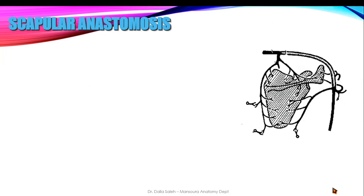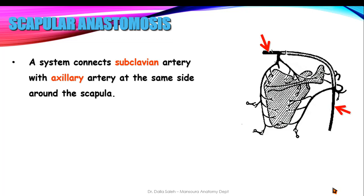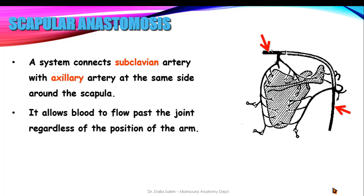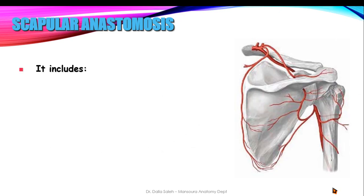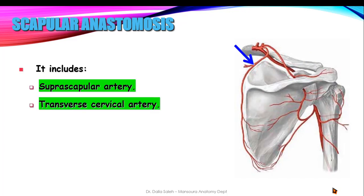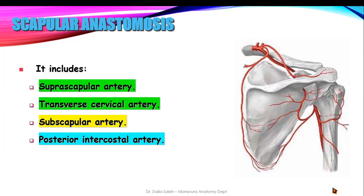The scapular anastomosis is a system of arteries that connect the first part of the subclavian artery with the third part of the axillary artery on the same side, around the scapula. Its significance is to allow blood to flow past the joint regardless of the position of the arm. It includes the suprascapular artery and the transverse cervical artery from the thyrocervical trunk, the subscapular artery from the third part of the axillary artery, and contributions from the posterior intercostal arteries.